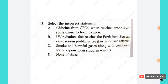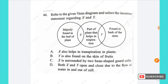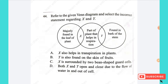Question 43: Select the incorrect statement. (A) Chlorine from CFCs reaches the ozone layer and splits ozone to form oxygen: correct. (B) UV radiation from the sun can cause skin cancer and cataracts: correct. (C) Smoking of harmful gases along with condensed water vapor forms smog in winters: correct. All three statements are correct, so the answer is option D — none of these.